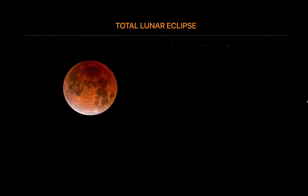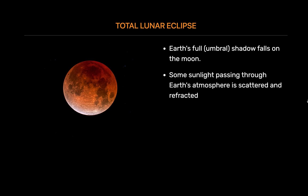Total lunar eclipse. Earth's full umbral shadow falls on the Moon. The Moon won't completely disappear, but it will be cast in an eerie darkness. Some sunlight passing through Earth's atmosphere is scattered and refracted, or bent, and refocused on the Moon, giving it a dim glow even during totality. If you were standing on the Moon looking back at the Sun, you'd see the black disk of Earth blocking the entire Sun, but you'd also see a ring of reflected light glowing around the edges of Earth — that's the light that falls on the Moon during a total lunar eclipse.